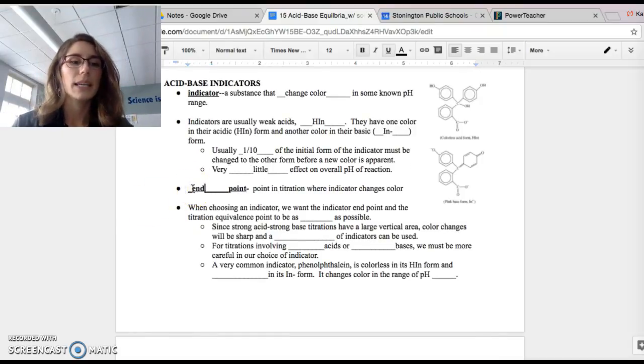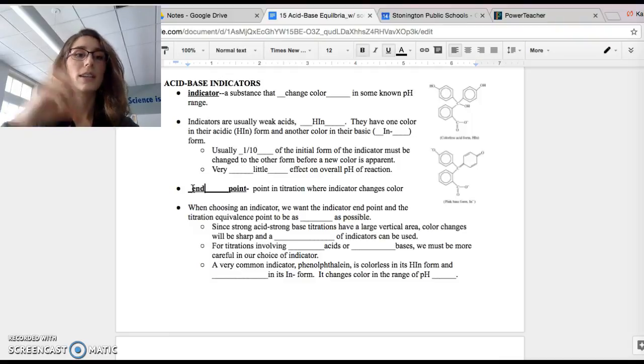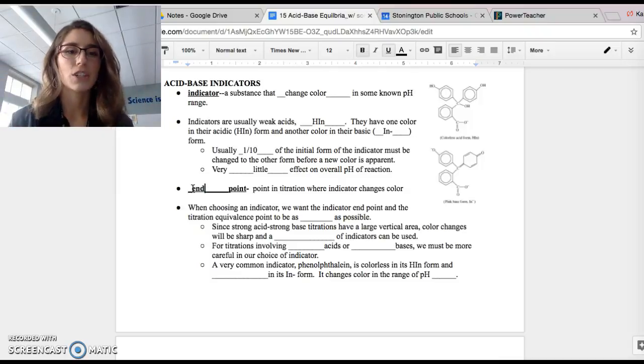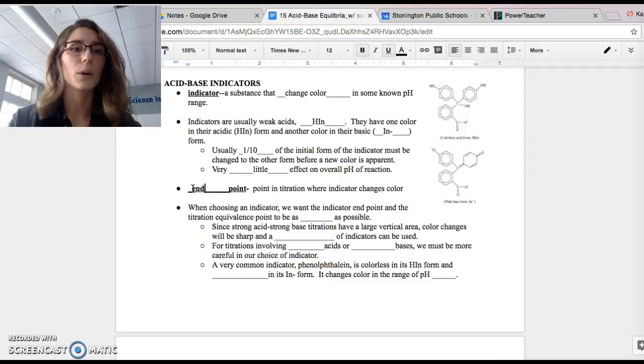Just terminology review, the endpoint of a titration is where the indicator changes colors. This is a qualitative piece of information. We need our endpoint to match the equivalence point of the titration. Otherwise, it's not so good. We don't have a matchup, and we get false information about what the equivalence point is, if we have an endpoint that's incorrect.